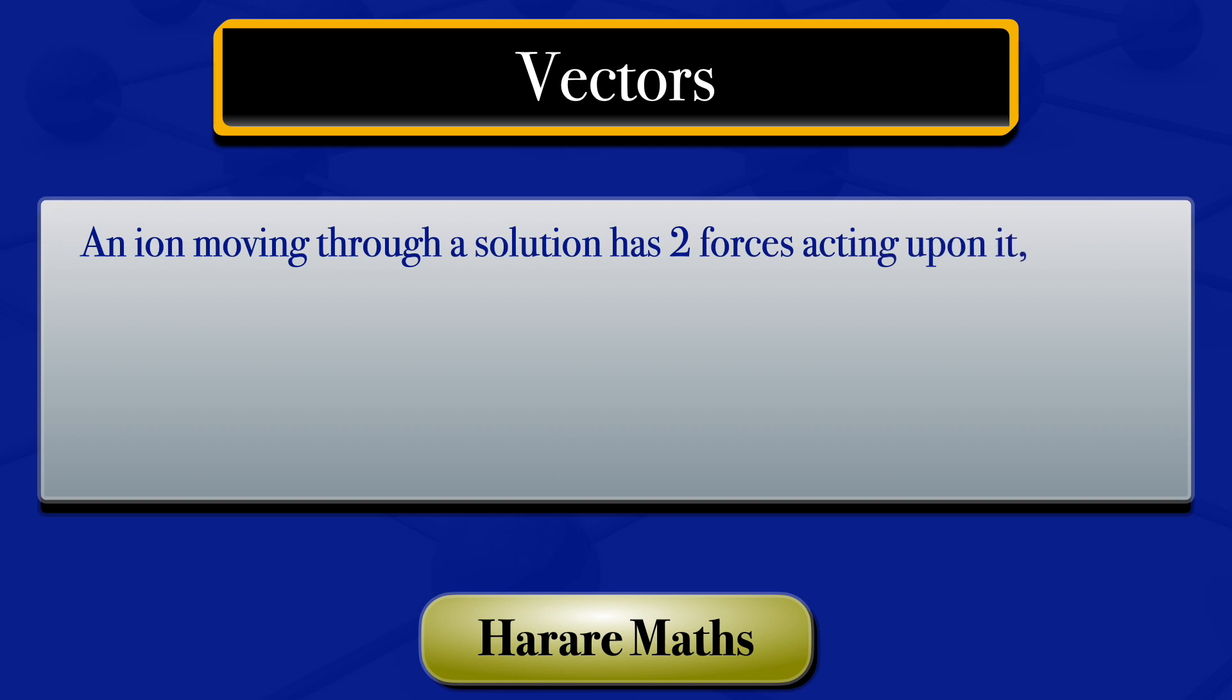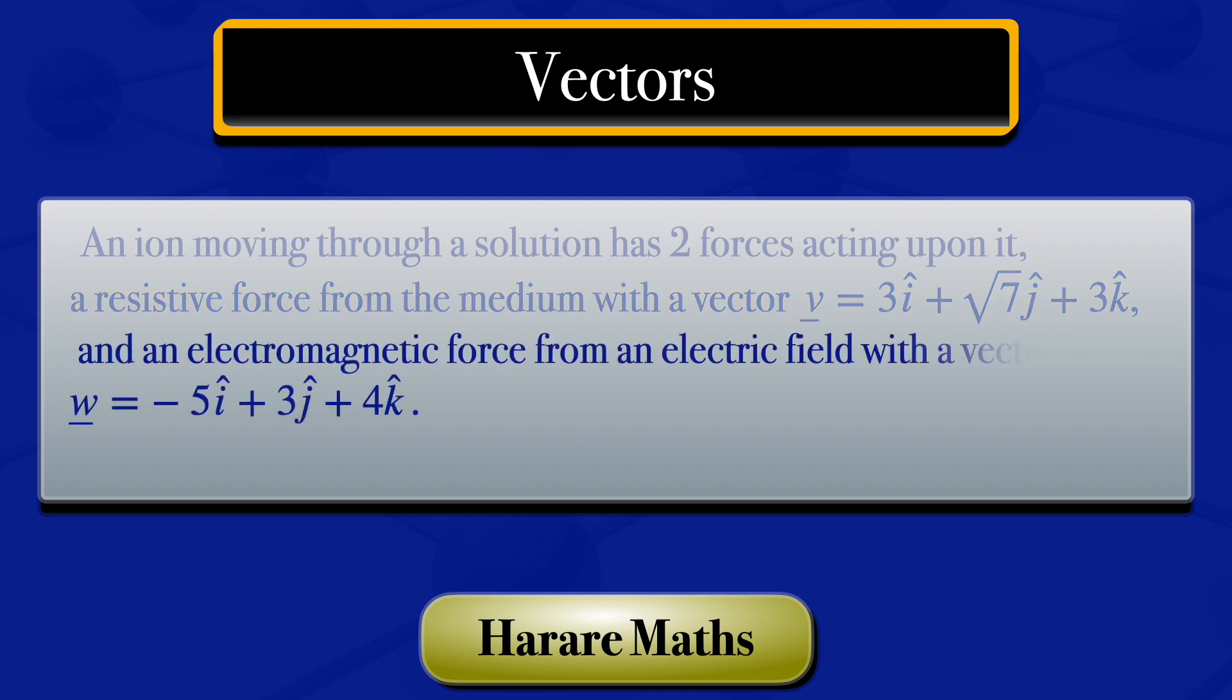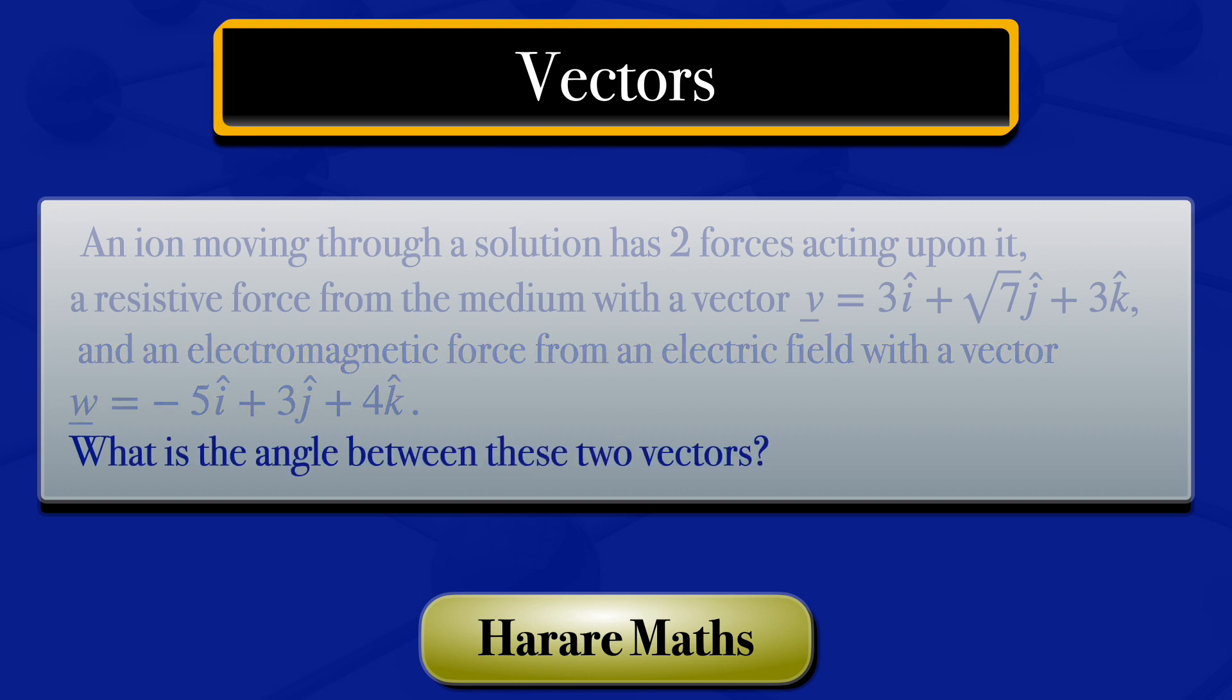An ion moving through a solution has two forces acting upon it: a resistive force from the medium with vector V equal to 3i plus root of 7j plus 3k, and an electromagnetic force from an electric field with vector W equal to minus 5i plus 3j plus 4k. In this video, I'm going to find the angle between these two vectors.